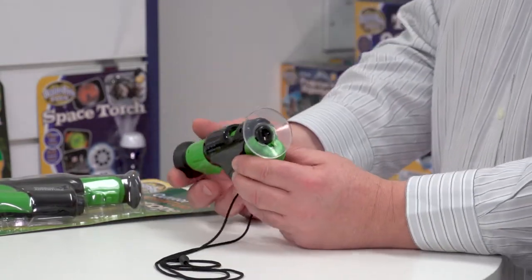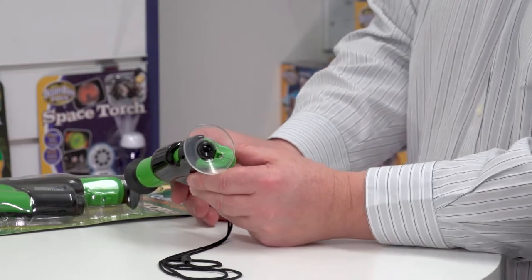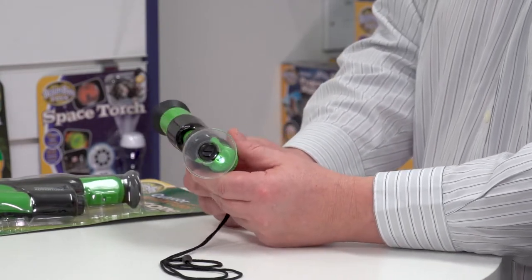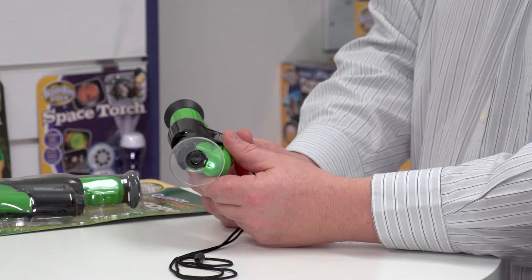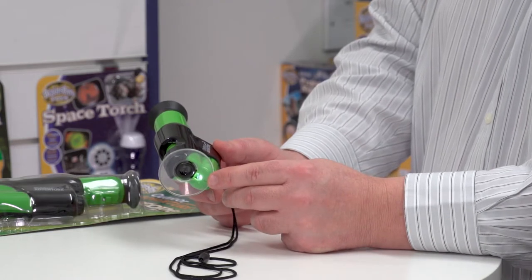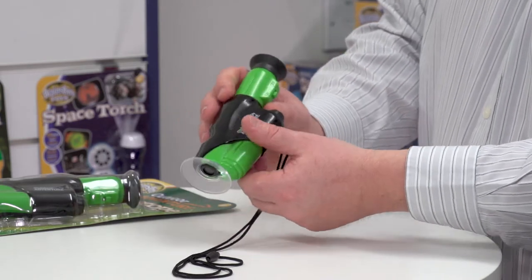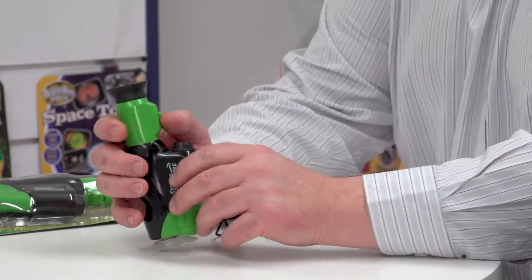And you need the batteries because one of the first features about this product is that we light up the object that we're going to bring under the microscope. You can see the little LED light here. So let's look at this in more detail on the table.